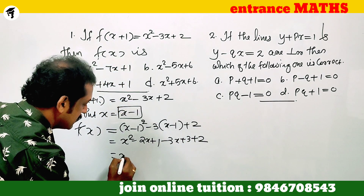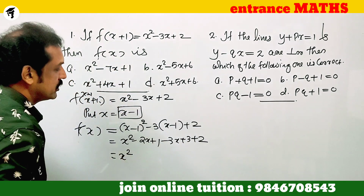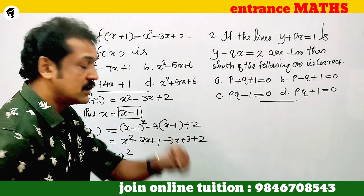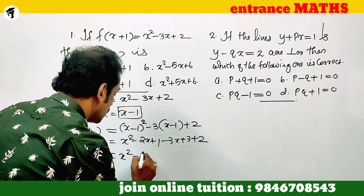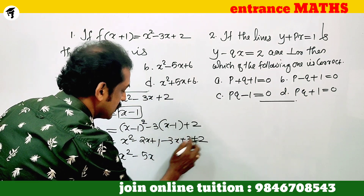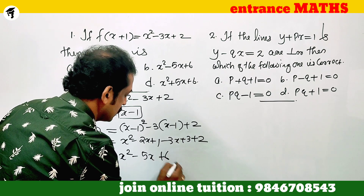Continuing the simplification: that gives x squared, and minus 2x minus 3x becomes minus 5x, and the constants 1 plus 3 plus 2 give plus 6.